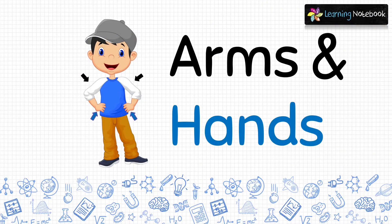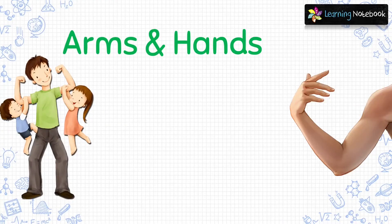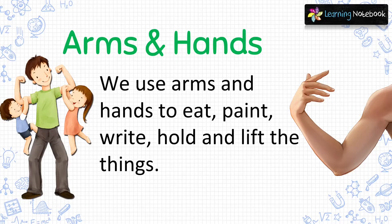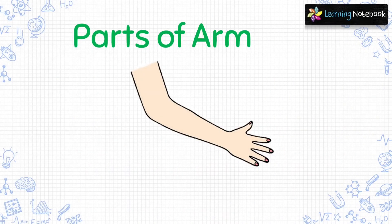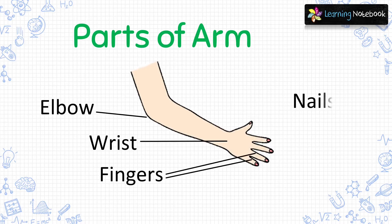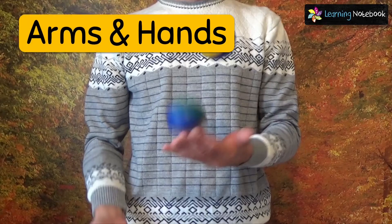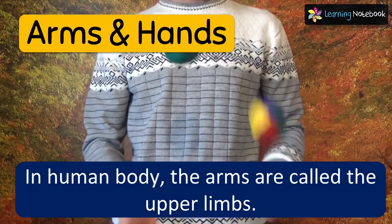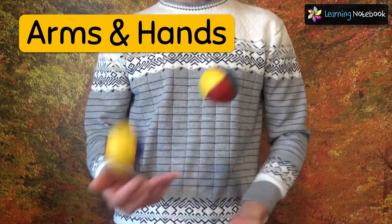Now, let's see the next external body parts which are our arms and hands. We use our arms and hands to eat, paint, write, hold and lift things. Now, let's see different parts of the arm. This is the elbow. There is the wrist. The hand consists of fingers and nails. These are parts of the arms. In the human body, the arms are called the upper limbs.